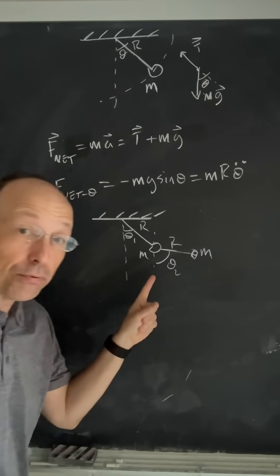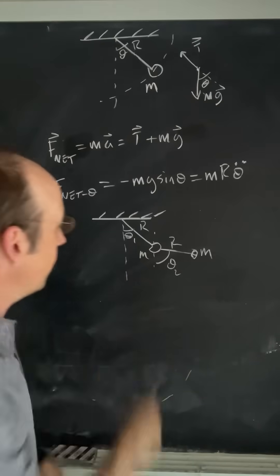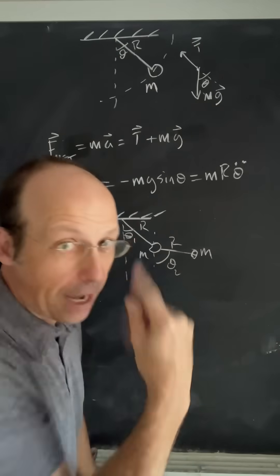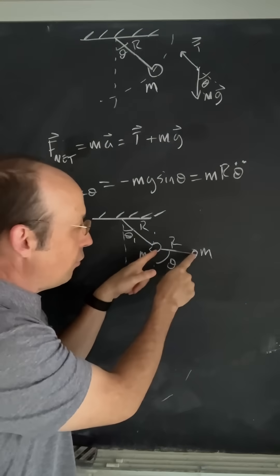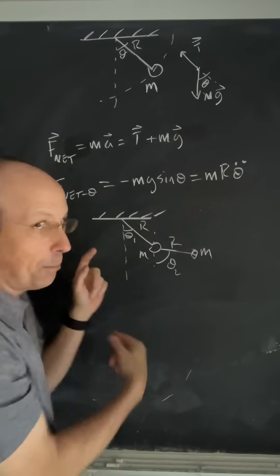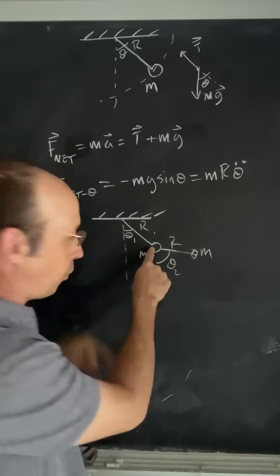But what about this problem? This is a double pendulum. So a double pendulum, we have two masses, two angles, and this one has two tensions acting on it. That one has a tension, but you can't use polar coordinates for the second mass because it's not moving in a circle. It's moving in a circle with respect to that.